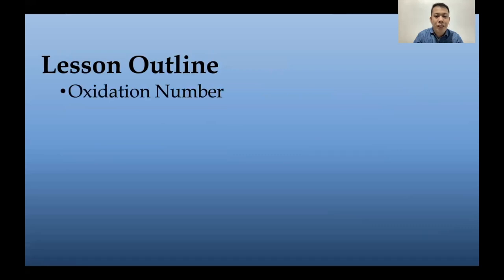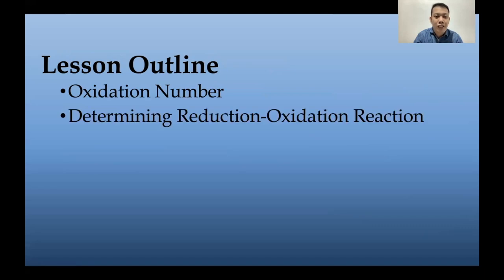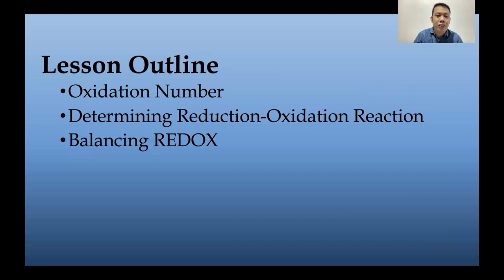For our lesson outline, we will first discuss oxidation number, also known as oxidation states, then steps on how to determine reduction-oxidation reactions, and how to balance a redox reaction. You'll be needing your knowledge about balancing equations — if you've watched my previous video, I discussed the different types of chemical reactions and how to balance each chemical equation.